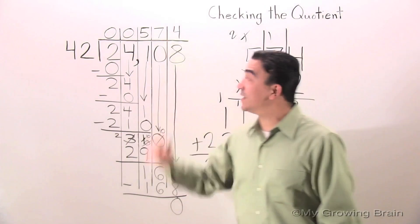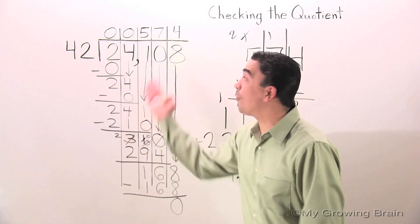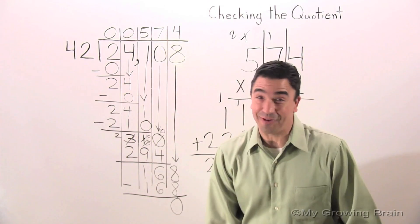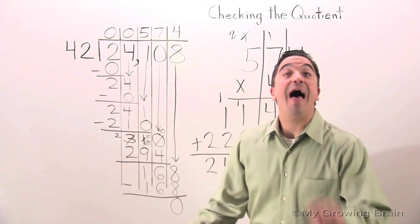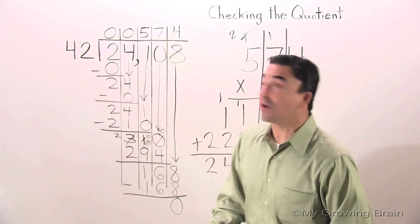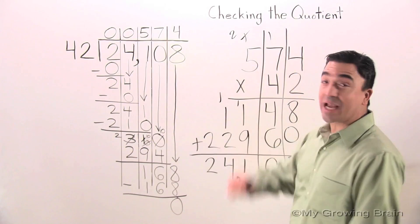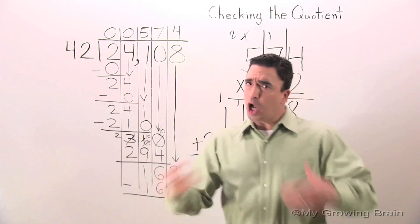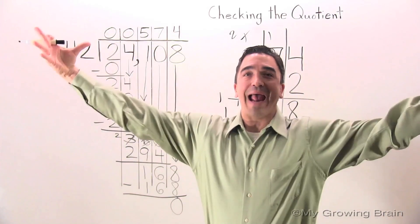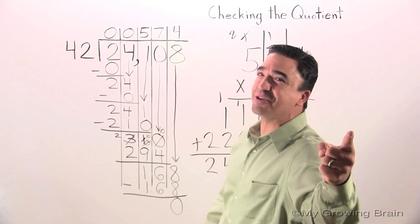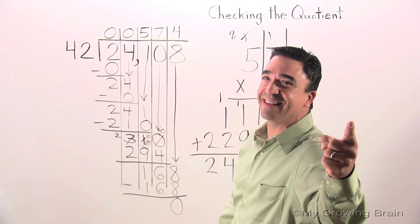The dividend is 24,108. That concludes our lesson on Checking the Quotient. Coach Mike at My Growing Brain — challenge yourself.